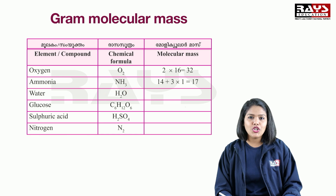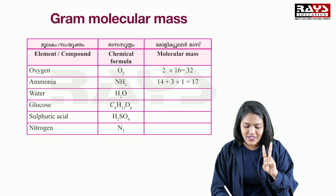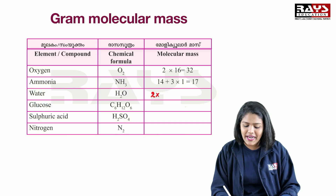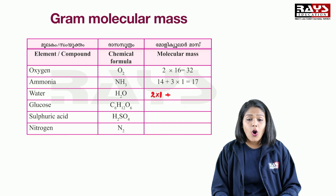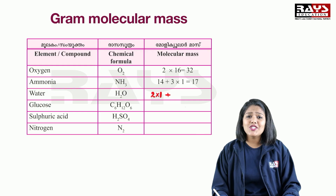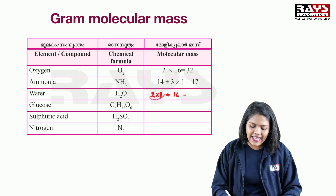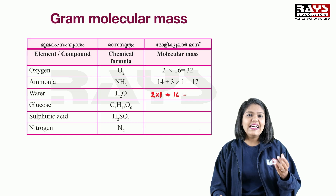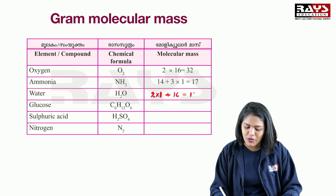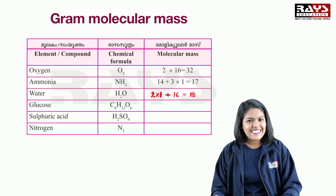In the next example, water is H2O. H2 means 2 hydrogen atoms: 2 × atomic mass of hydrogen (1). Plus 1 oxygen with atomic mass 16. So 2 × 1 plus 16 = 2 + 16 = 18. The molecular mass of water molecule is 18.